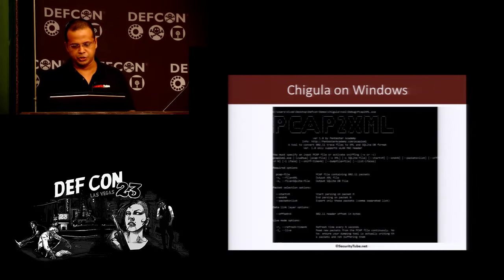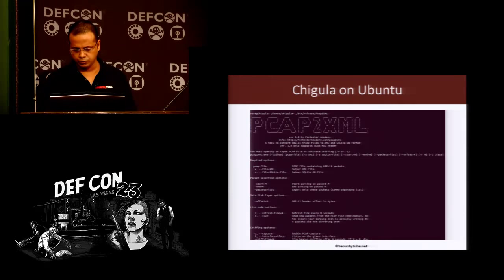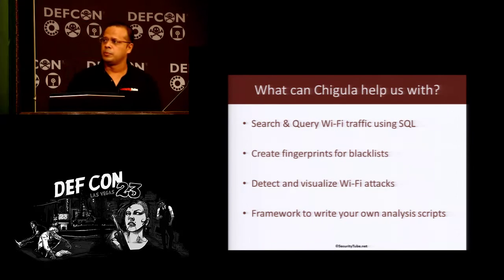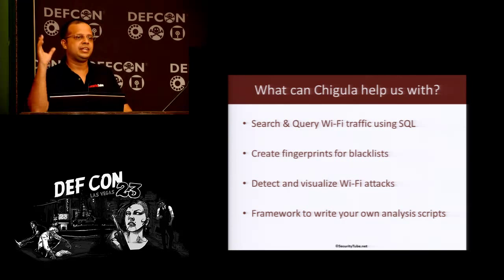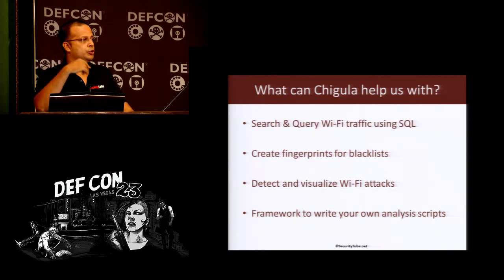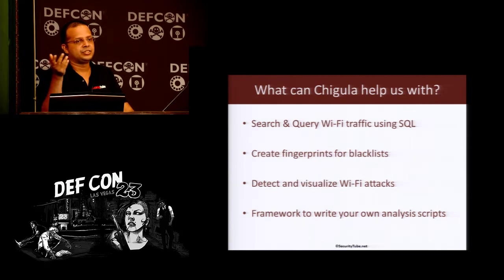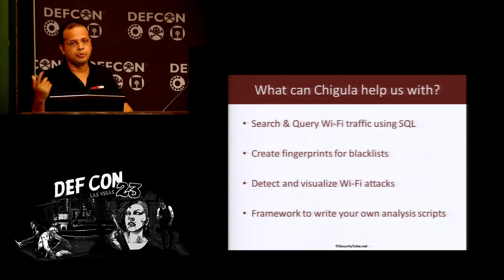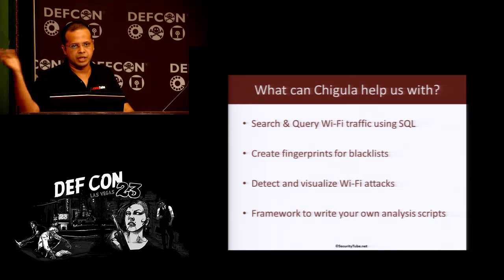Here is a screenshot of Chigula on Windows, and here is the same on Ubuntu 14. What can Chigula help us with? We take a PCAP file, pick up individual packets, parse each and every header field, and map it to a corresponding SQLite table. You could write SQL queries as granular as 'SELECT * FROM MAC headers WHERE fs_type equals something, subtype equals something,' and write tools on top of that which work across multiple queries.